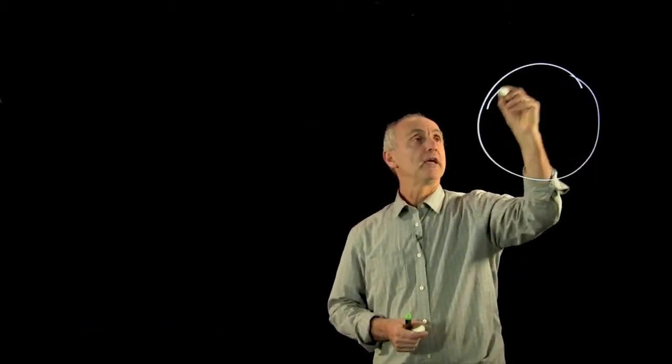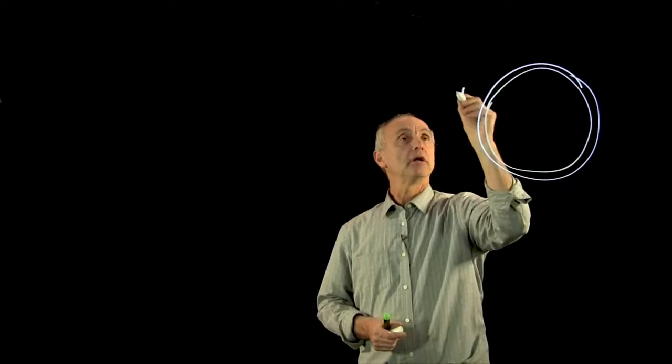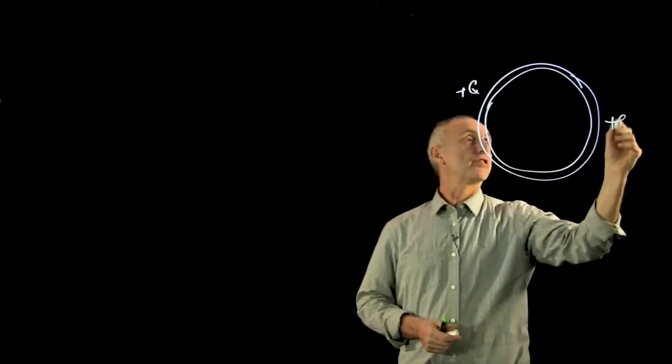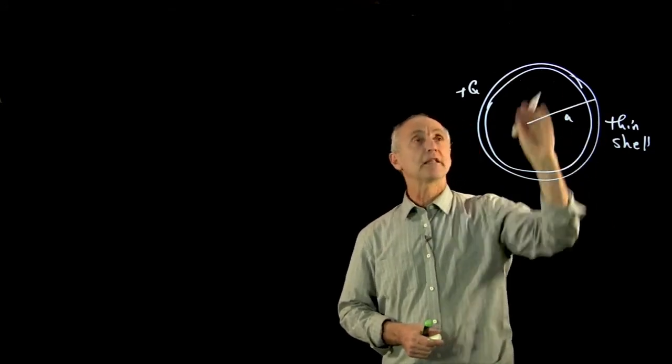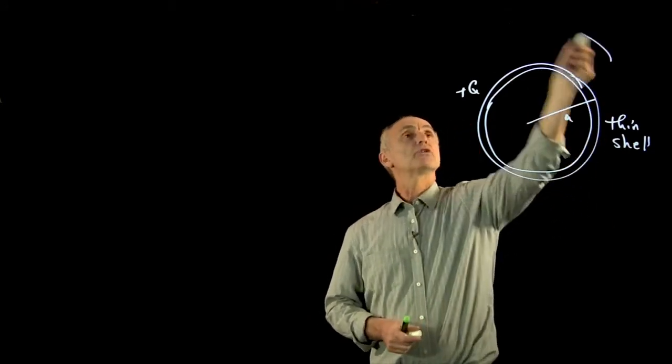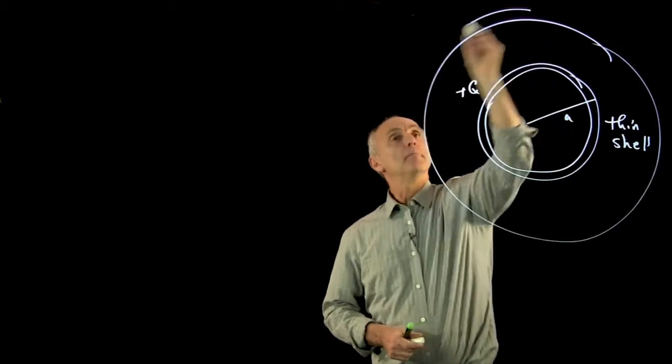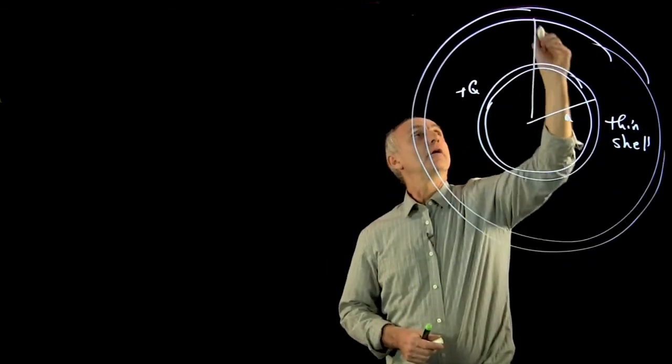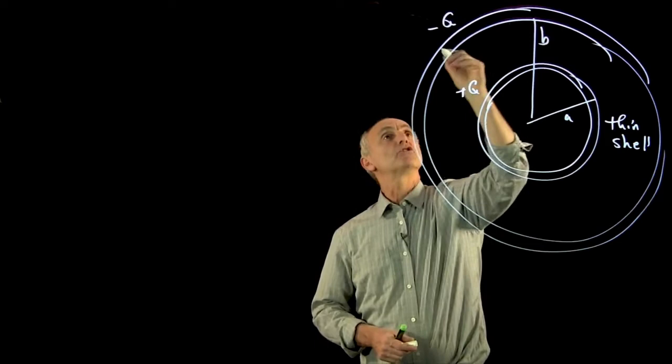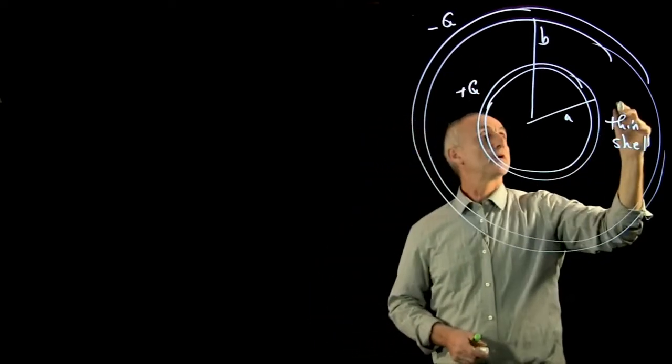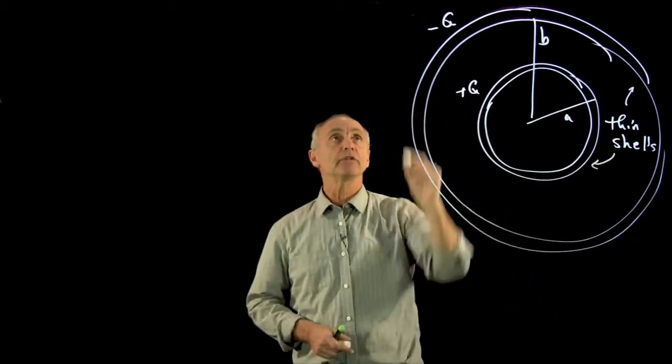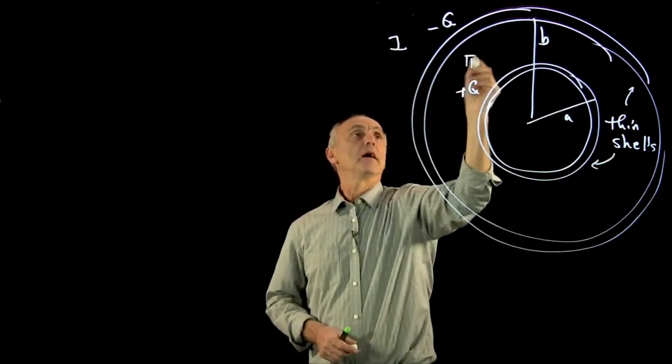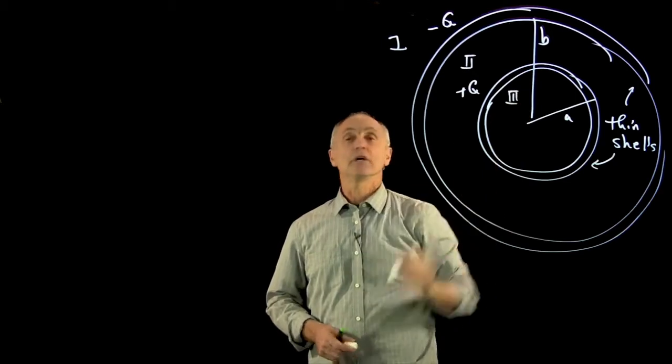Let's consider one more spherical symmetric distribution of charge. Here we have a thin shell plus q. So this is a thin shell. And we'll just denote the radius of the shell by a, and we're neglecting the thickness of the shell. And we're going to surround that by another thin shell of radius b, where we have a charge minus q. So we have two thin shells. And I'd like to find the electric field everywhere in space. And we have three regions of space.